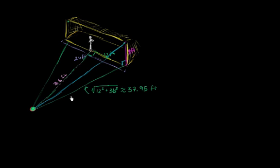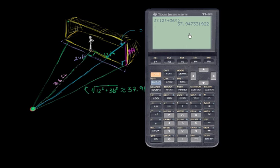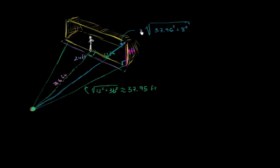Notice this is a 90-degree angle. One side is 37.95 feet, the other side is 8 feet tall. So this distance right over here is going to be the square root of 37.95 squared plus 8 squared. Let's figure that out with the calculator — squaring the last entry and then adding 8 squared, which is 64, and taking the square root of 1,504 gets us roughly 38.8 feet. So this is approximately equal to 38.78 feet.